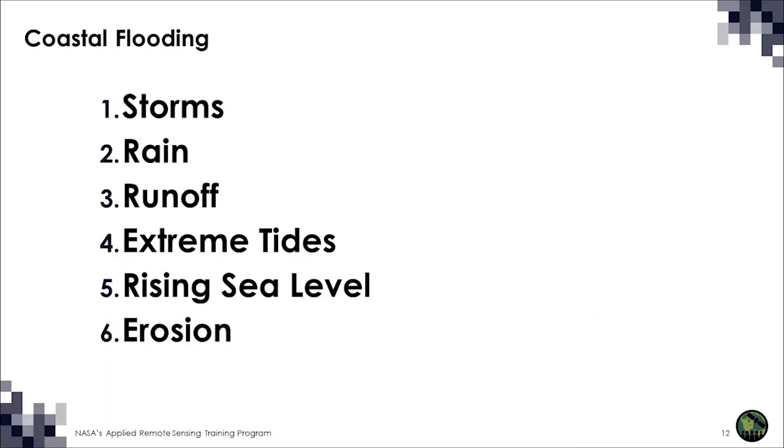Coastal flooding is often described as a problem, but I would suggest that we really need to think of it as six or seven different problems. There are storms — the obvious ones like hurricanes or typhoons in the Pacific — which bring waves and storm surge that get up inside canals and waterways and amplify. But that's all weather-driven. Apart from storms, there's just heavy rainfall. As the oceans warm, we're getting heavier rainfall, dramatically so in many places, which seems counterintuitive because we're also getting more drought, but those things go together in a warming world.